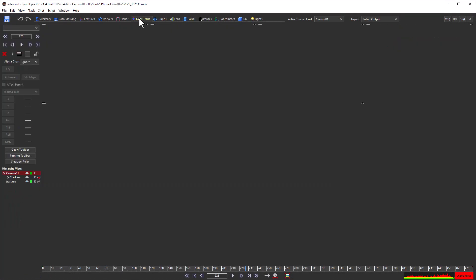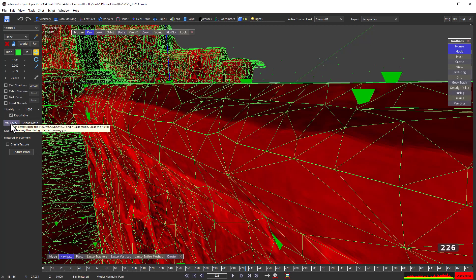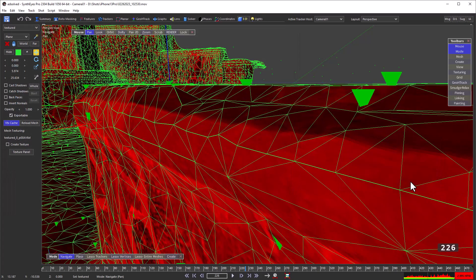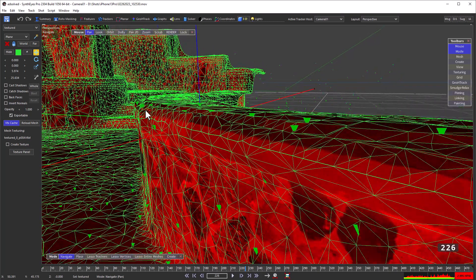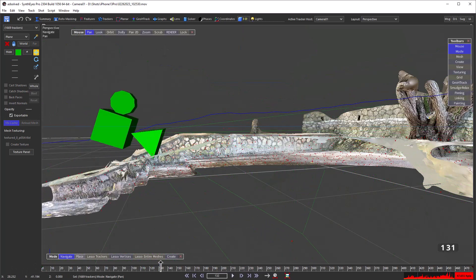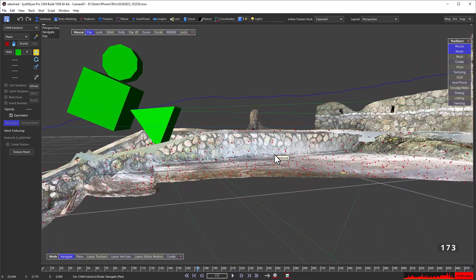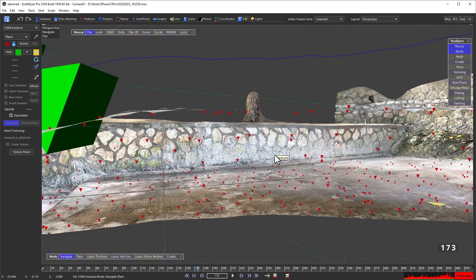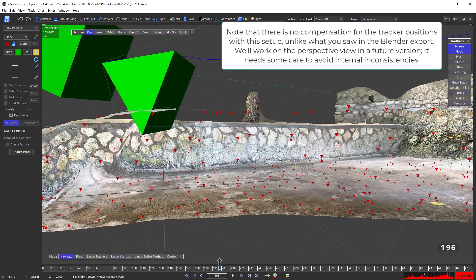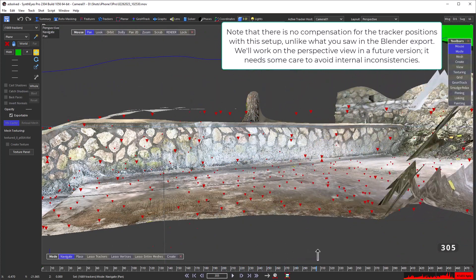I'm loading that vertex cache into SynthEyes, so the stairway will be compensated in the SynthEyes perspective view. We're not displaying back faces, making it easier to see the smaller and smaller shifts at further distances out in front of the camera.